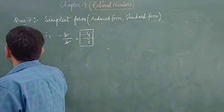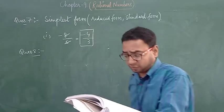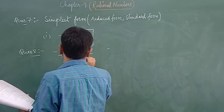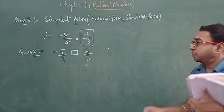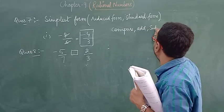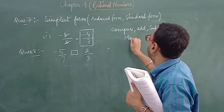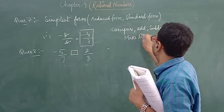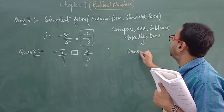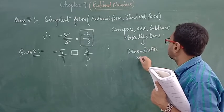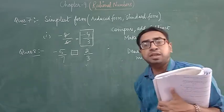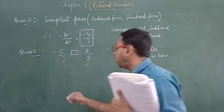Question number 8: we have to compare. Minus 5 by 7 and 2 by 3 — we have to see which is the bigger number. Whenever we compare rational numbers, the rule is to make like terms first, meaning the denominator must be the same. The LCM of 7 and 3 is 21.